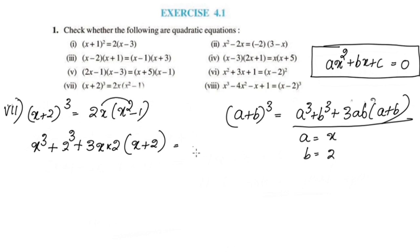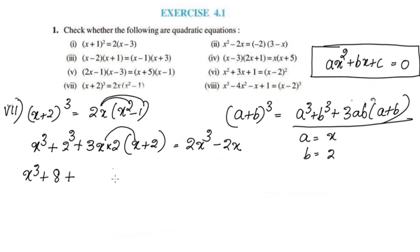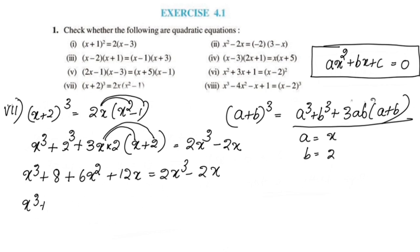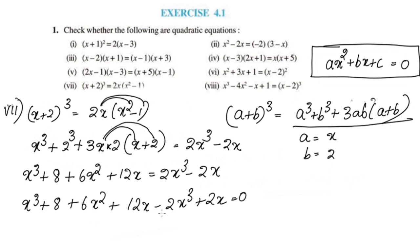This is equal to 2x in the multiply, giving 2x cubed. 2x cubed minus 1 in the multiply gives minus 2x. Then x cubed plus 2 cubed is 8, plus 3x into 2 is 6x, 6x into x is 6x squared, 6x into 2 plus 12x. This is equal to 2x cubed minus 2x. The value is x cubed plus 8 plus 6x squared plus 12x minus 2x cubed plus 2x equals 0. This is the value of degree 3.